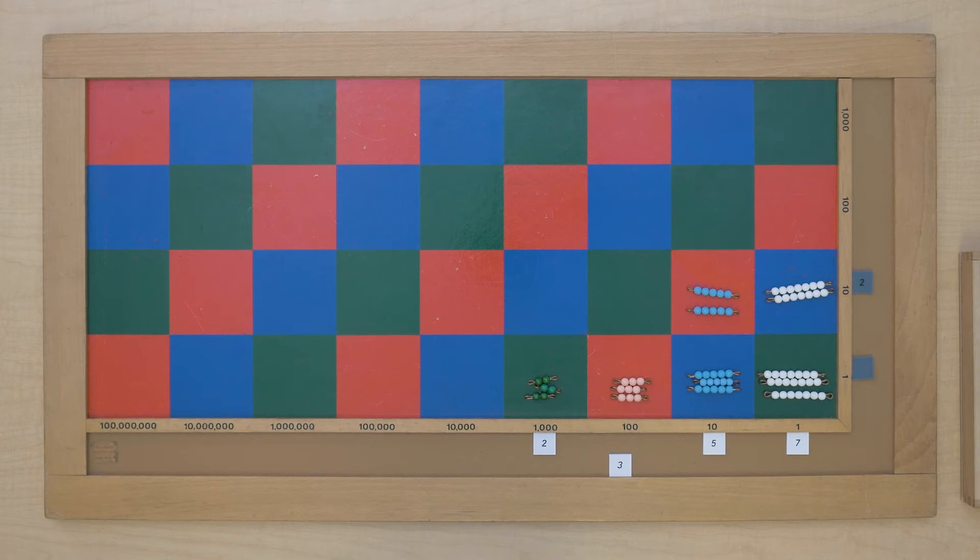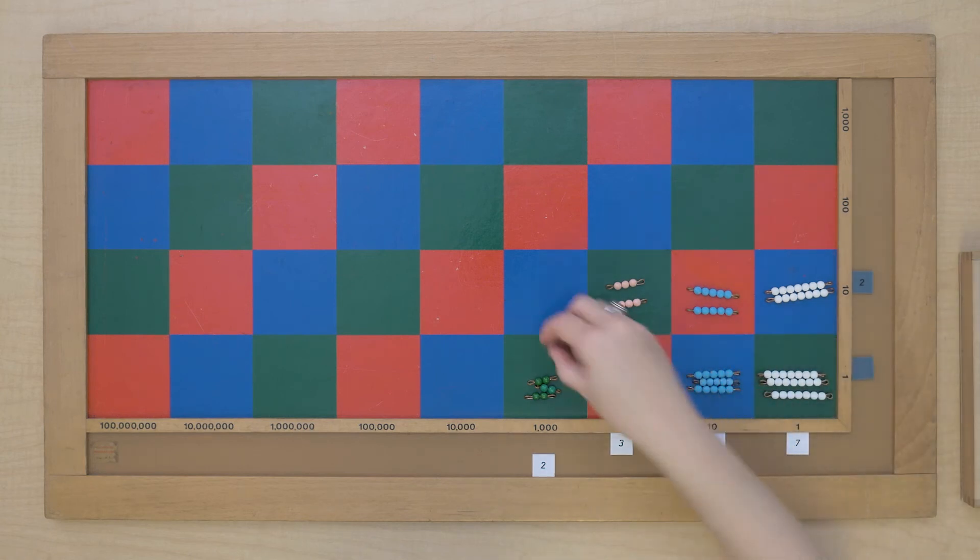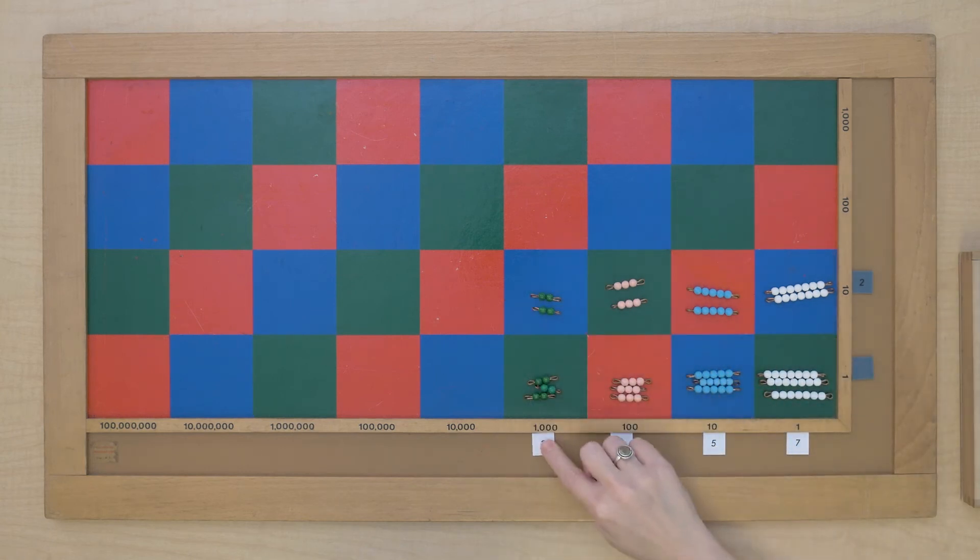Three times two. And two times two. All right, we've now completed our multiplication with 2,357 times 23.